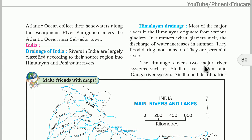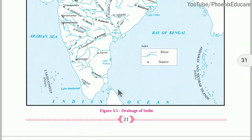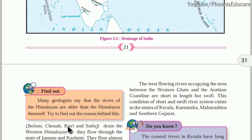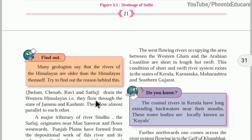The drainage covers two main river systems: the Sindhu river system and the Ganga river system. Sindhu is also called Indus river. The tributaries of Indus — Jhelam, Chenab, Ravi, Beas, and Satlaj — can be remembered with the shortcut JCRBS: J for Jhelam, C for Chenab, R for Ravi, B for Beas, and S for Satlaj. These rivers drain the western Himalayas and flow through the state of Jammu and Kashmir.